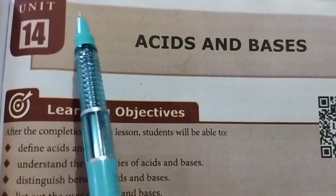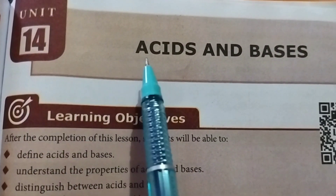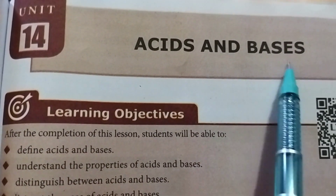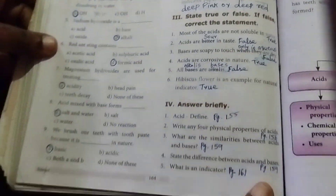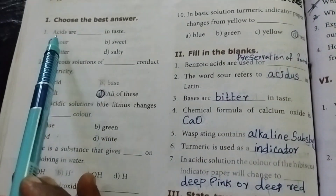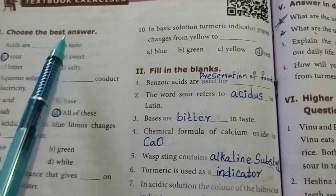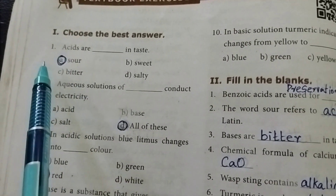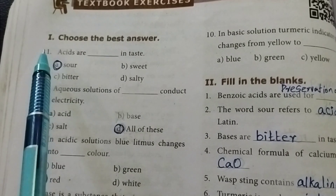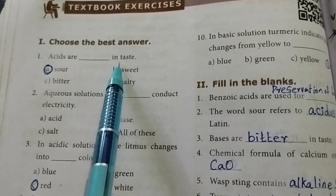8th standard science unit 14, acids and bases. In the lesson order, book back answers. Take page number 164. Roman numeral I: choose the best answer. First one: acids are sour in taste. Option A: sour.